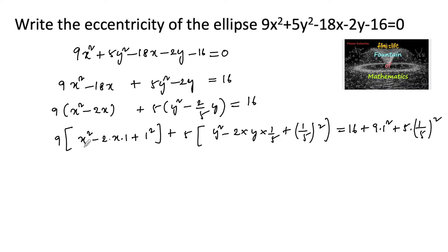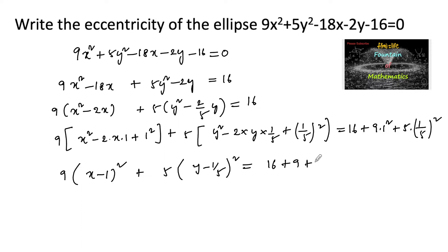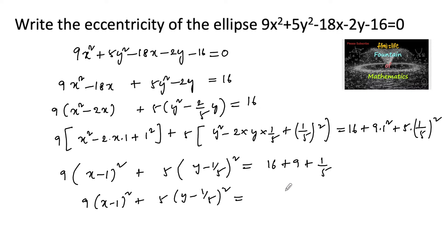Simplifying, we get 9(x - 1)² + 5(y - 1/5)² = 16 + 9 + 5/25. That is 16 + 9 + 1/5, which equals 25 + 1/5 = 126/5.